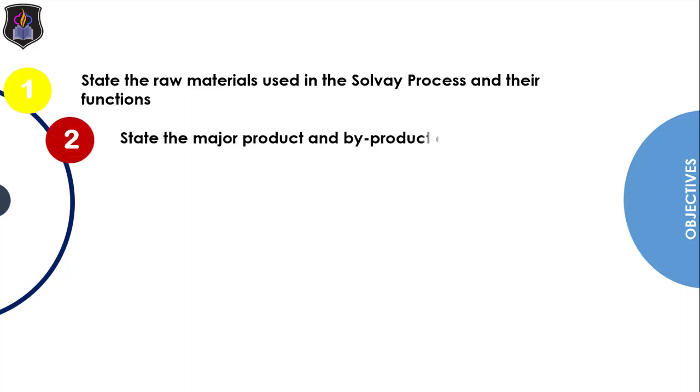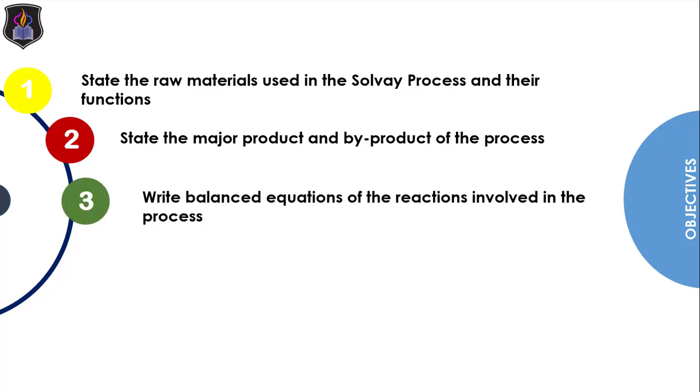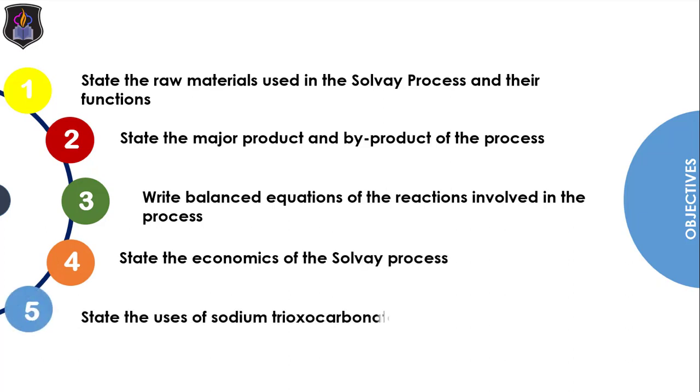At the end of this lesson, you should be able to state the raw materials used in the Solvay process and their functions, state the major product and byproduct of the process, write balanced equations of the reactions involved in the process, state the economics of the Solvay process, and finally, you should be able to state the uses of sodium trioxocarbonate (IV).